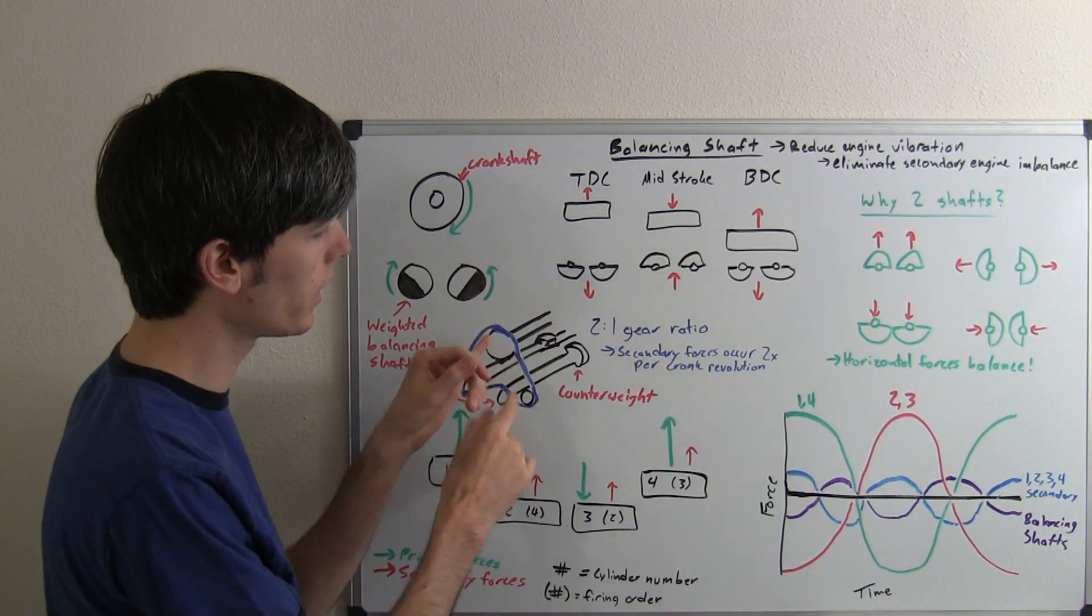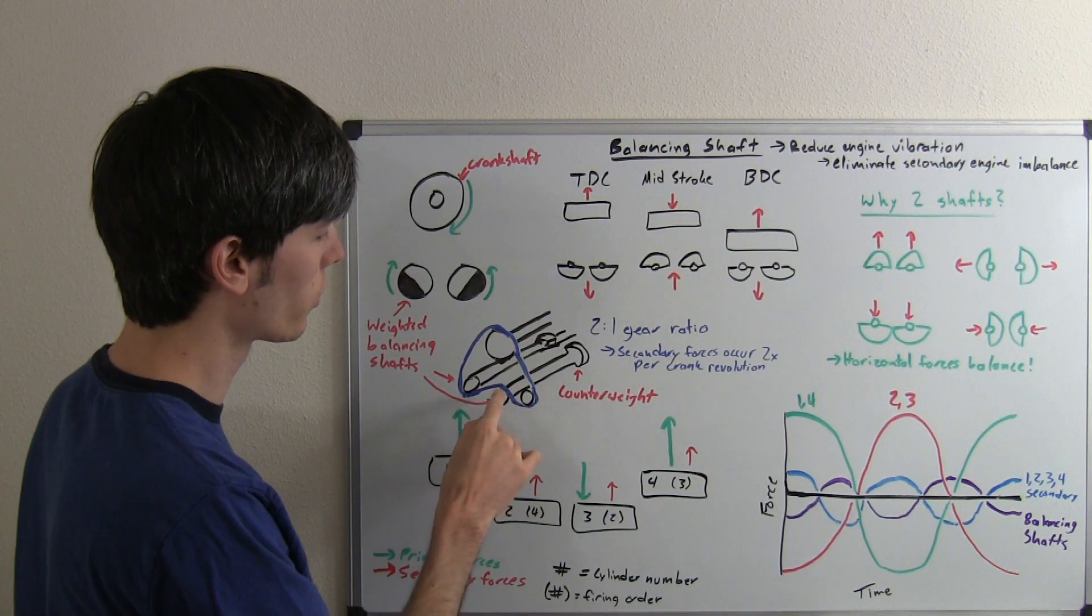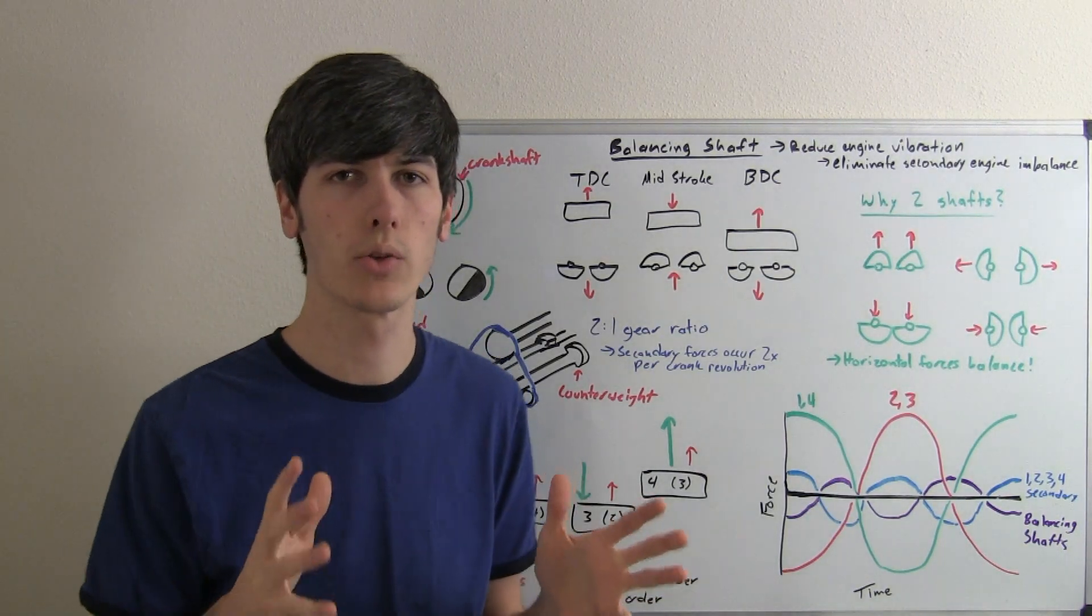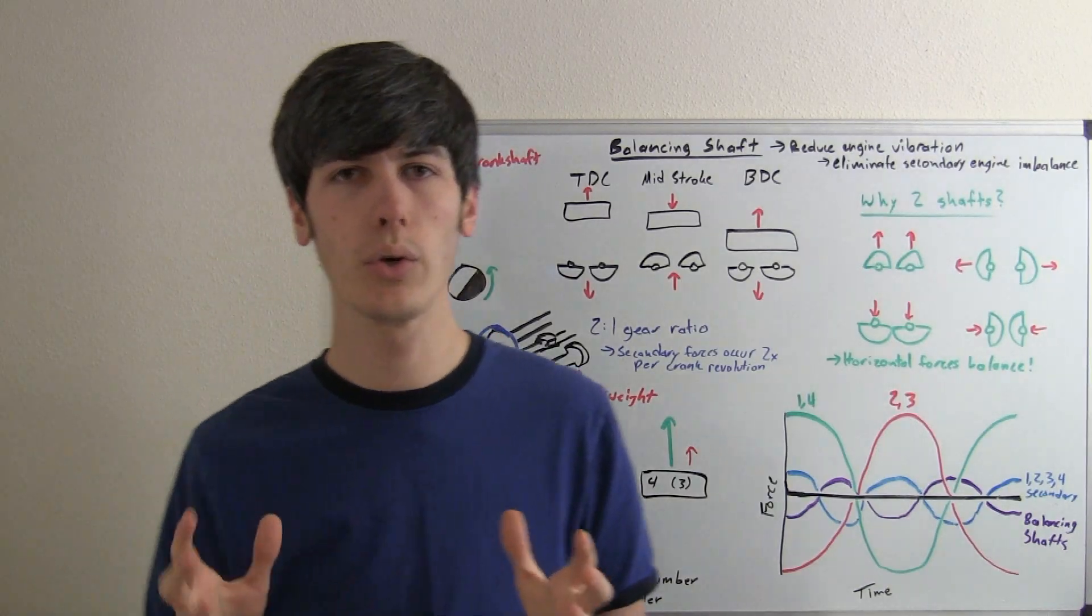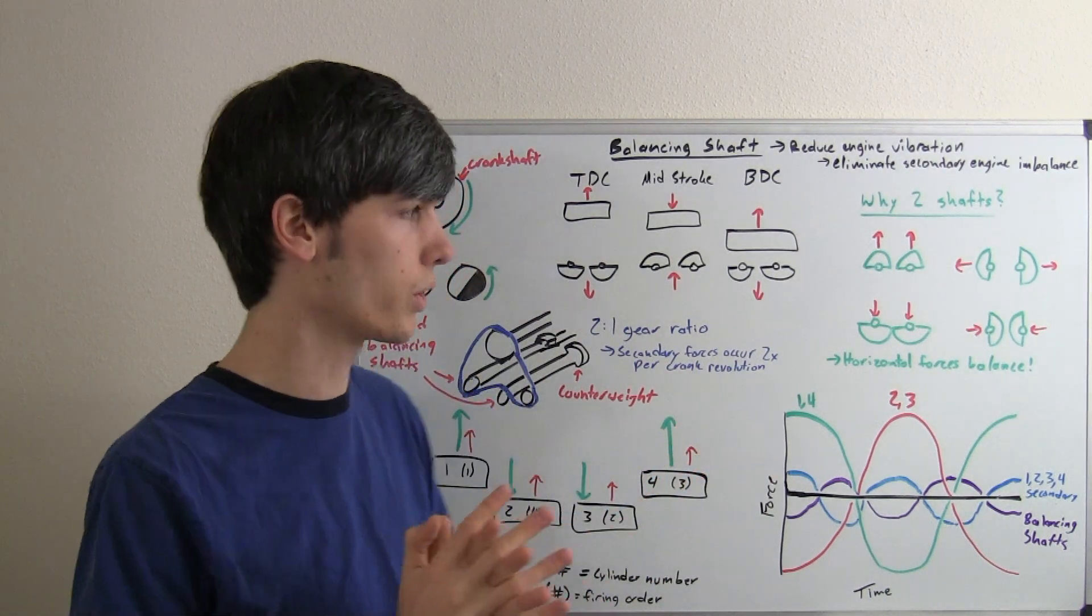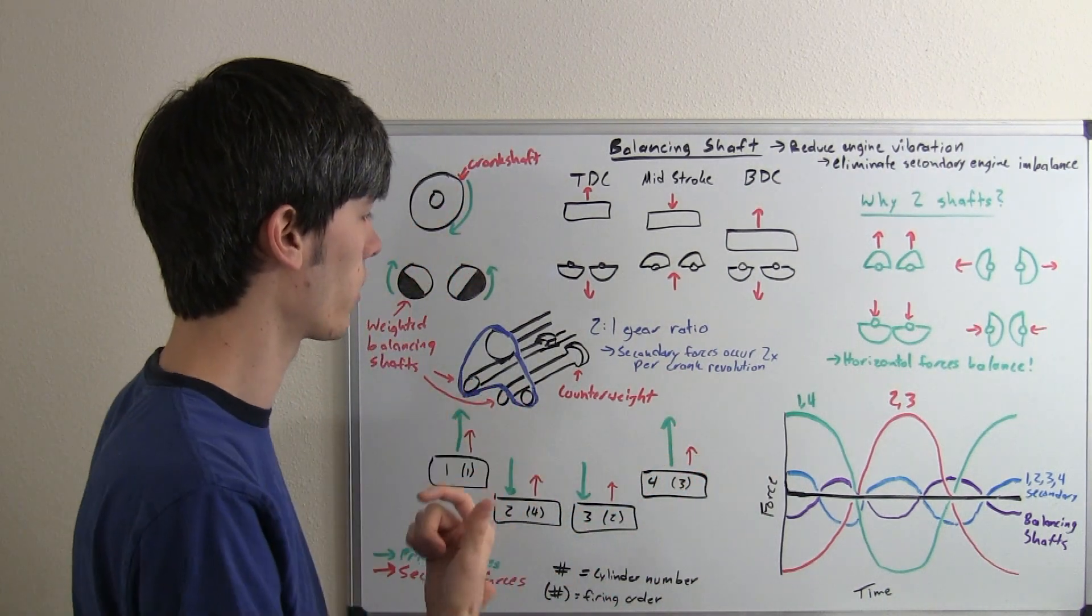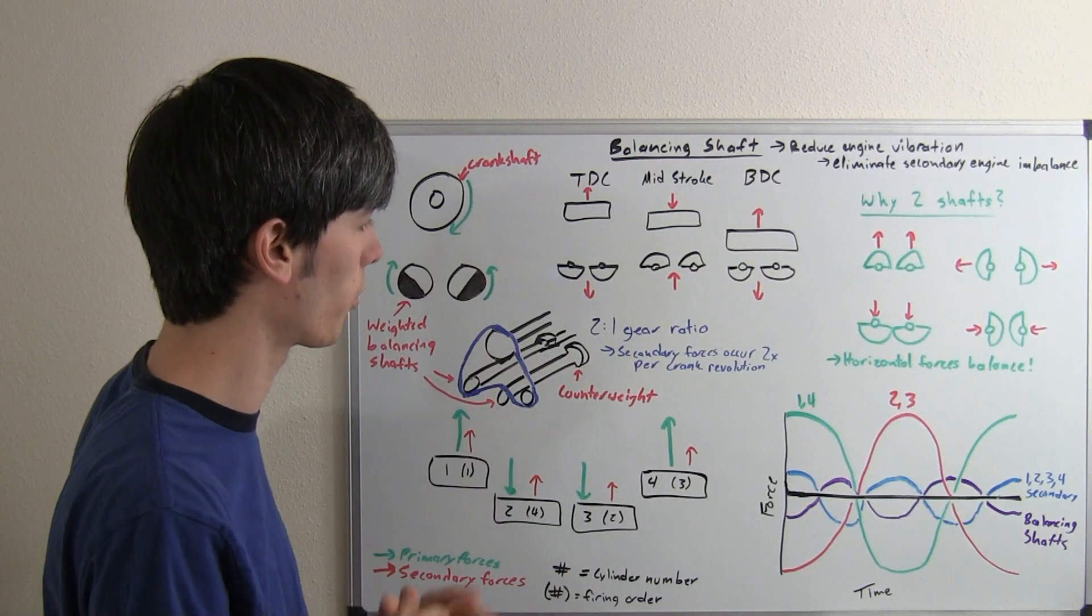There's a 2 to 1 gear ratio between the crankshaft and the balancing shafts, so the balancing shafts rotate twice for every one rotation of the crankshaft. The reason you do that is because secondary forces occur twice per revolution of the crankshaft, so you need to have these forces counteracted twice by rotating the balancing shafts twice per revolution.